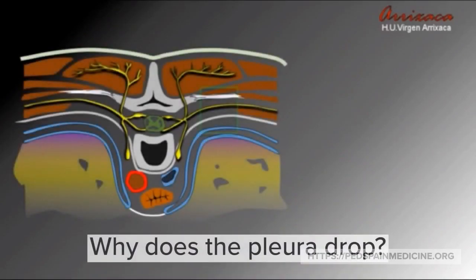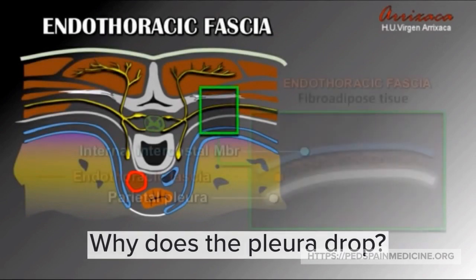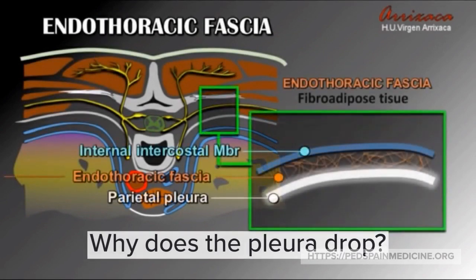Why does the pleura drop? When we inject local anesthetic, we are separating the parietal pleura from the endothoracic fascia.